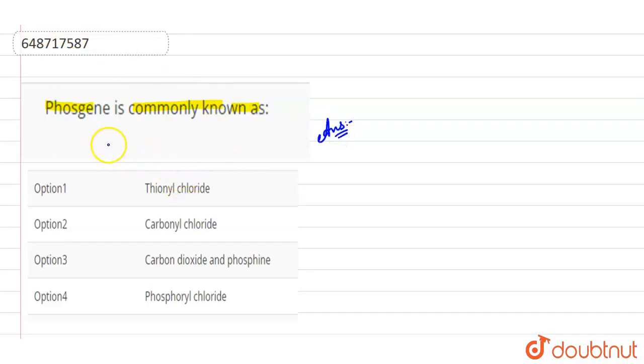Alright, so the answer for this question that phosgene is commonly known as, the correct answer is option 2. That is carbonyl chloride. Here, phosgene is commonly known as carbonyl chloride, right?